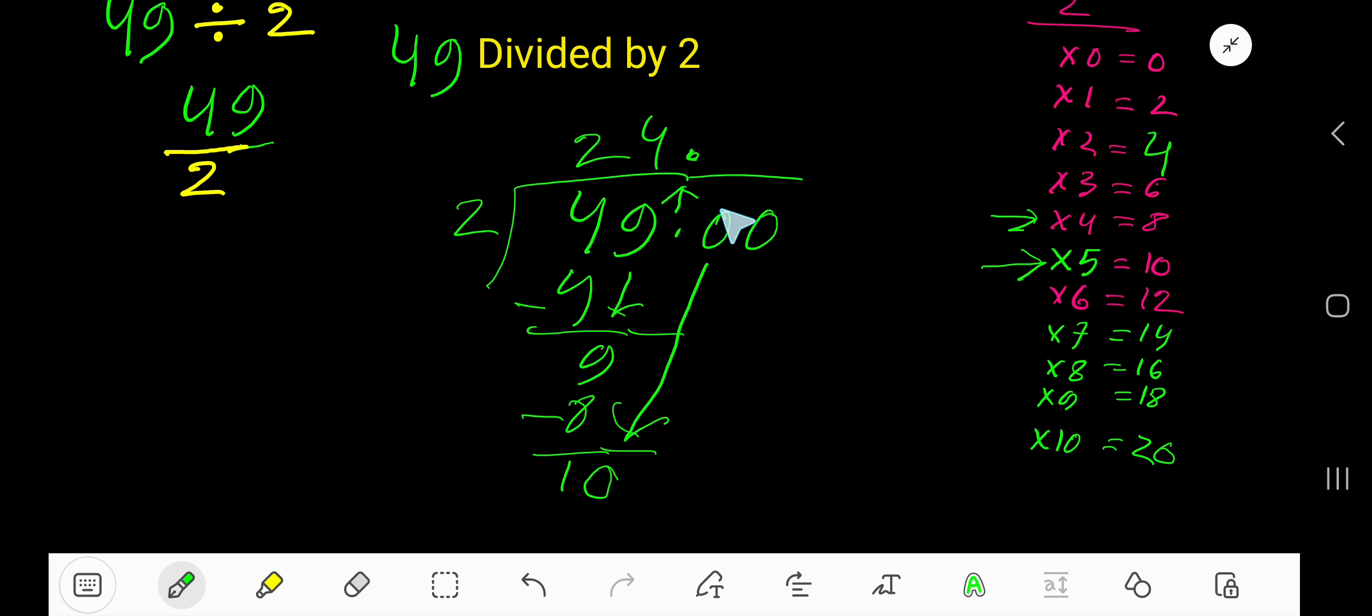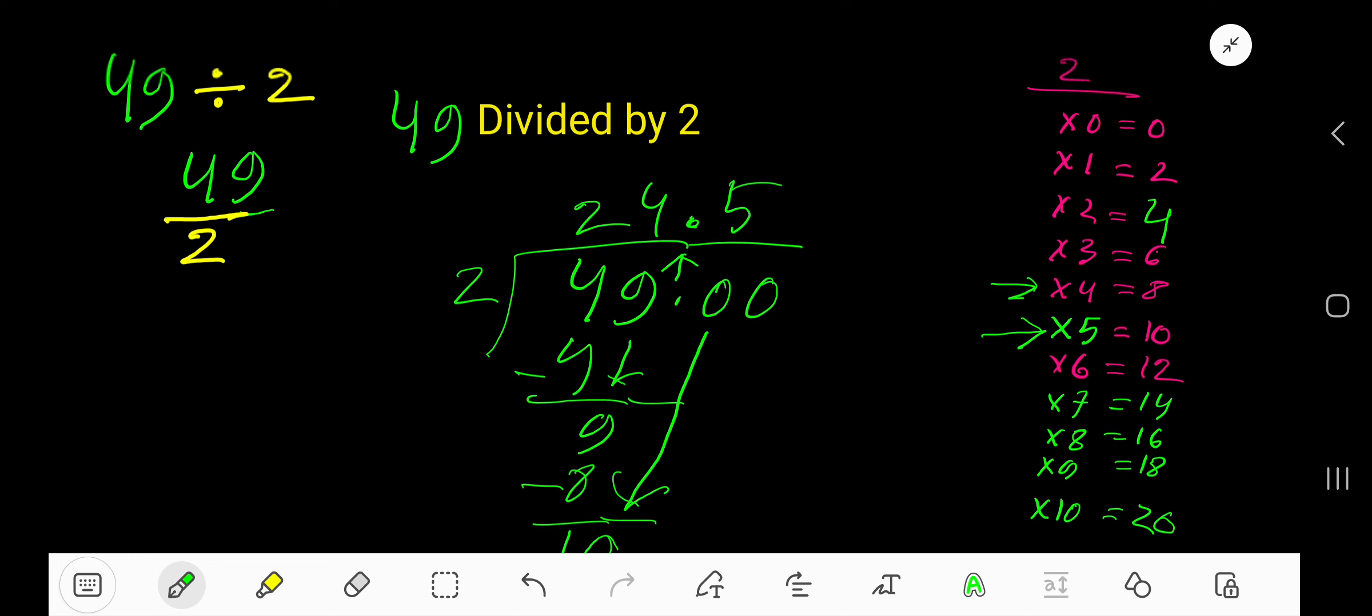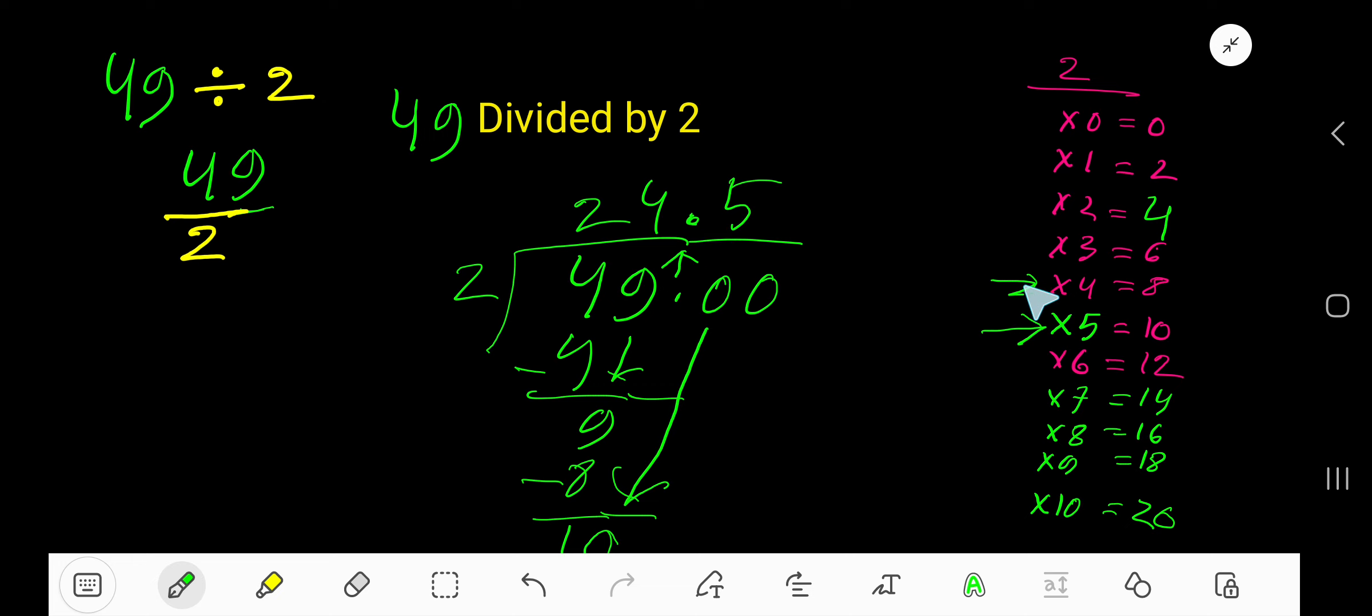5 times 10. 5 times 2 is 10. You subtract and the result will be 0. So 24.5 is your answer.